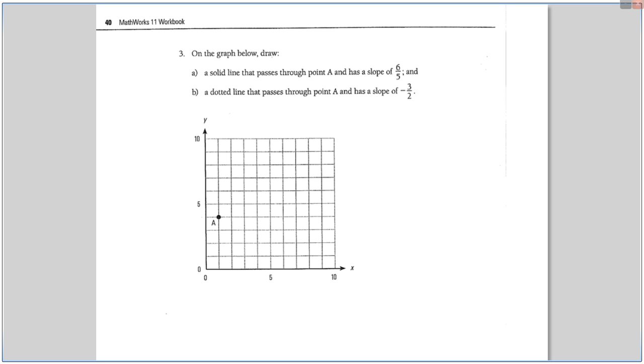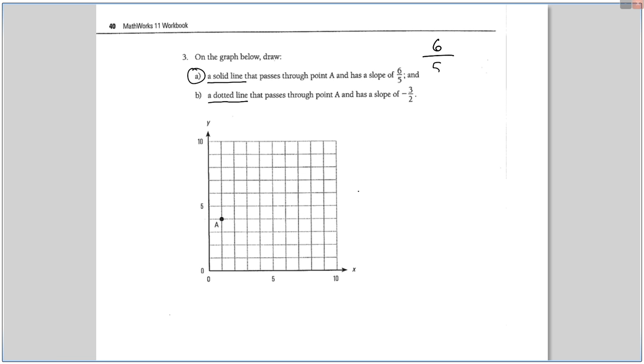One more to go, and then I'll let you try some homework. Question 3. On the graph below, you need to be able to draw the lines. Let's start off with the first one. And if, like I said, if you had different color pens, then it works out nice. If you got a pencil, then it'll be fine, because they're going to make you do a dotted line versus a solid line. So a solid line that passes through point A and has a slope of 6 over 5. What does the 6 and what does the 5 represent? 5 is the run. And the 6 is the rise. And which way do we always go for the run? Left or right? Right. We always go to the right.